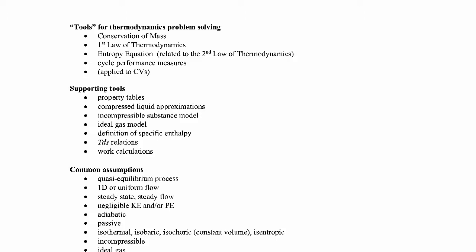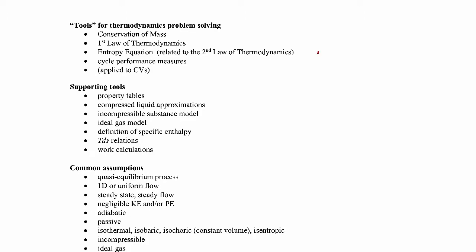The last item, the last sort of tool I have listed here are cycle performance measures. What I mean by that is something like the expression for the thermal efficiency for, let's say, like a power cycle, or the coefficients of performance for a refrigeration cycle or a heat pump cycle. So that's what I mean by the cycle performance measures. The last thing I have listed here in parentheses is applied to control volumes, because all of these four items that I've listed here really are applied to control volumes. So make sure that when you use them, you show your control volume, make it clear which control volume you're using. And then it's also helpful to include the energy flow diagrams showing where heat and work and mass are going into or out of the control volumes.